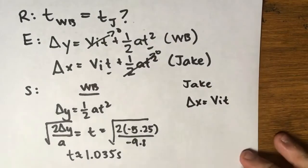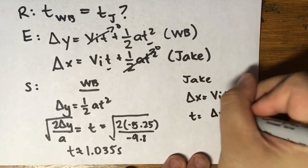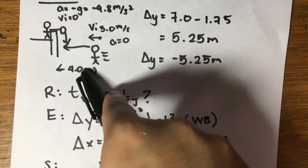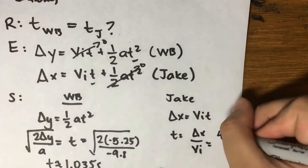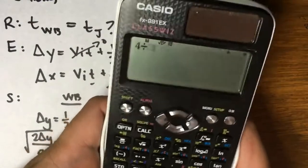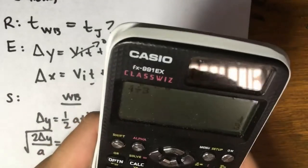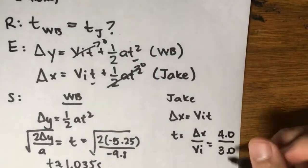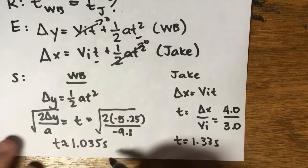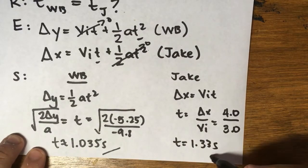Now let's go with Jake. Delta x equals vit because it's a constant uniform speed. Now if we want to isolate time, it's simply going to be t is equal to delta x over vi. This is just going to be 4 divided by 3, so that's 4 meters at the top, 3 meters at the bottom. Now let's get my calculator. 4 divided by 3 is 1.33 seconds.